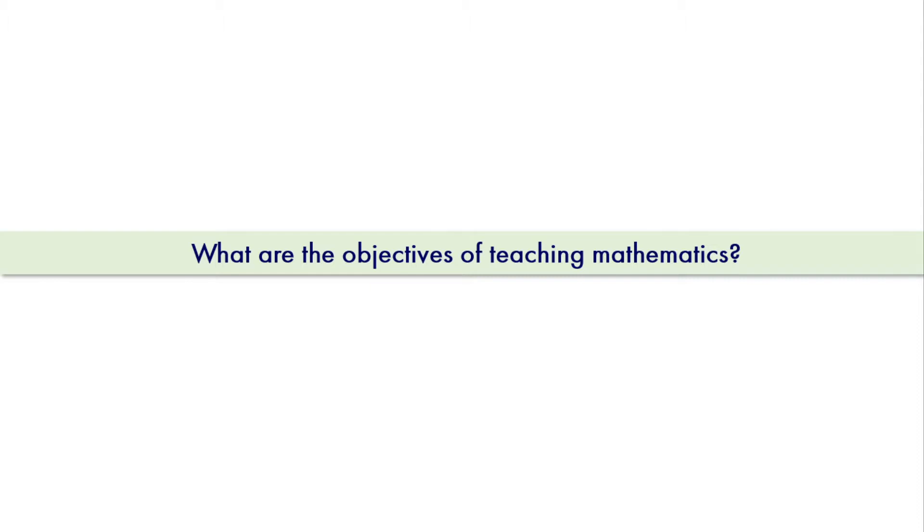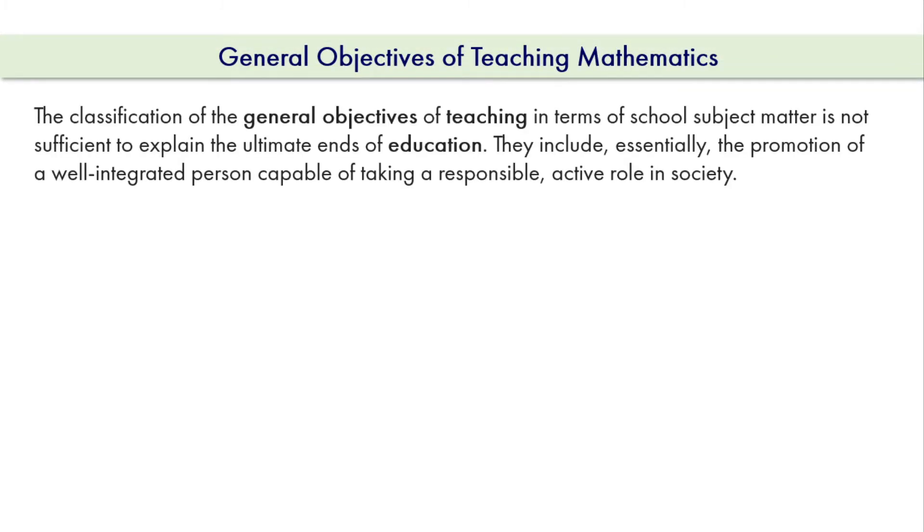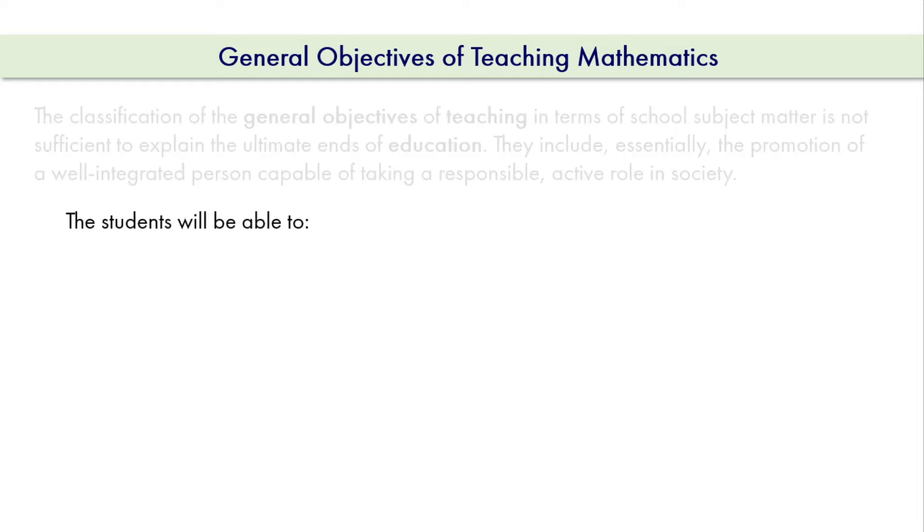So now we will discuss what are the objectives of teaching mathematics. Aims of teaching mathematics are generally broad in scope, whereas objectives of the subject are specific goals leading ultimately to the general aims of the subject. The objectives of teaching mathematics in school can be described as general and specific objectives. General objectives are school-wide statements of what learners are expected to become - what general changes of behaviors are expected from learners.